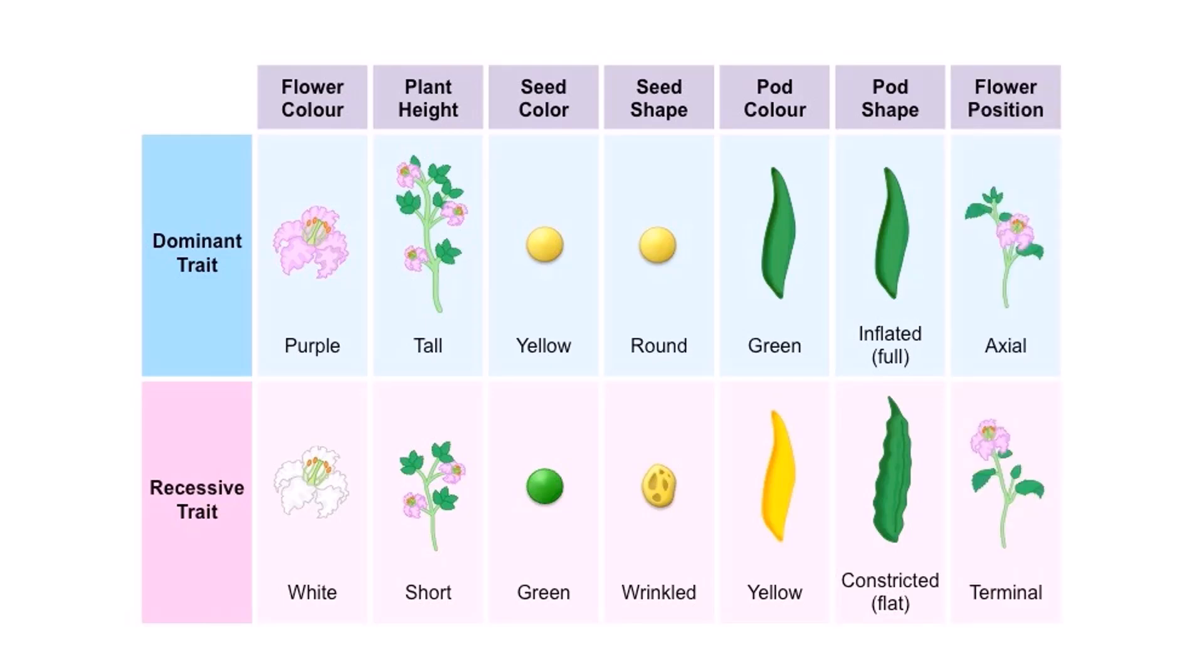The last pair of contrasting traits is the flower position. In this, the axial flowers are dominant over the terminal flowers. In an axial flower, the flowers are born on the axis of the flower. So therefore, after bearing flowers, the growth of the branch or stem is not restricted. But this is not the case in a terminal flower. In a terminal flower, the growth is restricted after bearing a flower. So in an axial flower which is dominant trait, the number of flowers is not restricted since the growth is not restricted. But in case of terminal flowers, the number of flowers is limited because the growth of the branch or the stem is restricted. So more the number of flowers, more will be the progeny. So therefore, the dominant trait is the axial flowers.